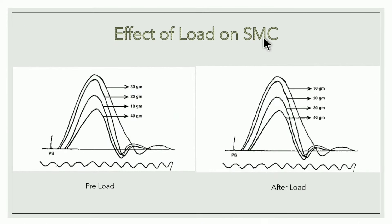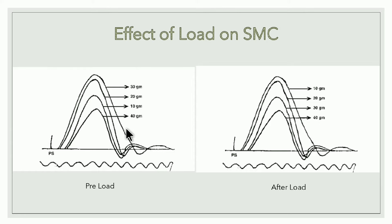Effect of load on simple muscle curve: we apply load to the skeletal muscle and give electrical stimulation. We apply four types of load: 10g, 20g, 30g, and 40g. There are two types of graphs — preload and afterload. In preload, loading is done before muscle contraction. We give 10, 20, 30, and 40 gram loads, then give electrical stimulation, and simple muscle curves are obtained.